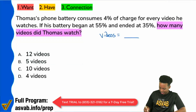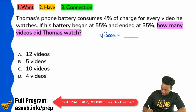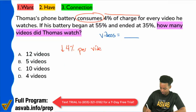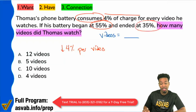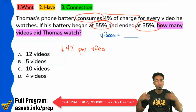We want to know how many videos — let's dive in. We see that it consumes 4% for every video, so I can write that as a negative — it consumes 4% of charge for every video, so we're going down 4% per video. What else do we know? We know that Thomas's battery began at 55% and ended at 35%. So pretty much what I want to know is: how many times can we take away 4% from 55% to get down to 35%?